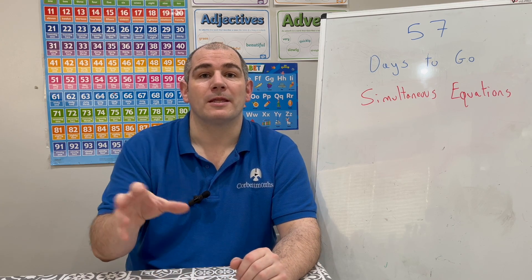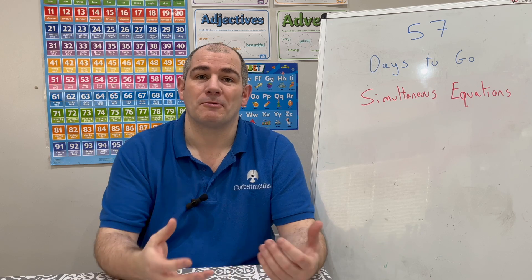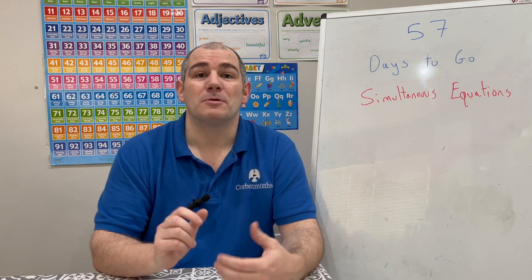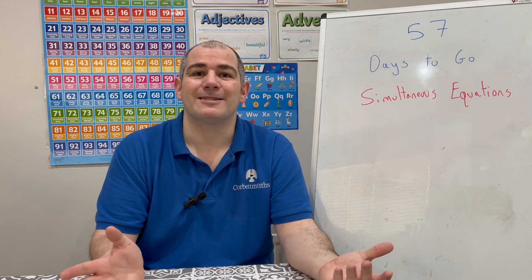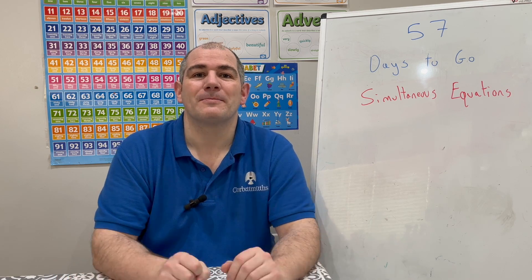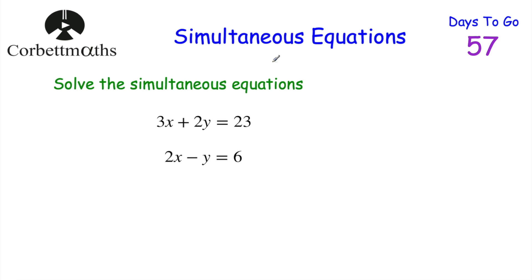I've also got a wordy one at the end, just to show you one of those. So we're going to go through simultaneous equations — let's get started. Today's topic is simultaneous equations. In this question, we've been asked to solve the simultaneous equations 3x + 2y = 23 and 2x − y = 6.